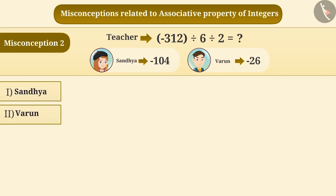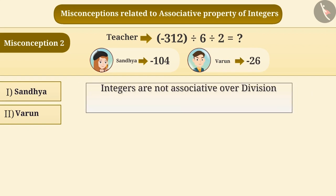Sometimes, students ignore the fact that integers are not associative over division. That means, for any integers a, b, c, (a ÷ b) ÷ c is not equal to a ÷ (b ÷ c).